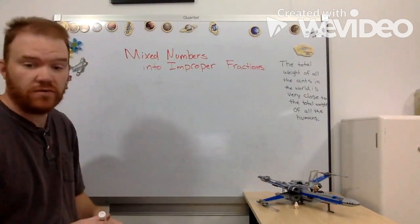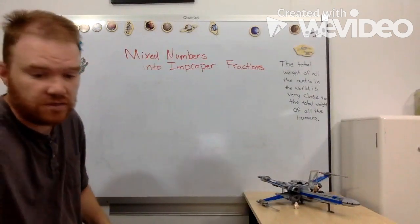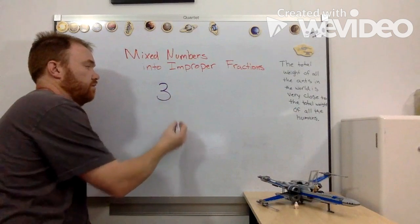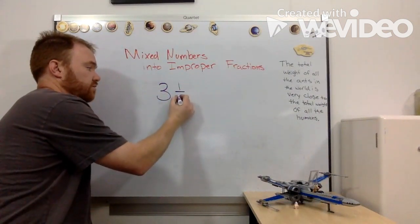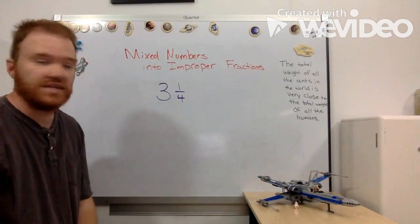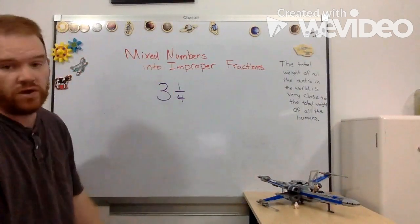First I want to review what a mixed number is. A mixed number is whenever I have a whole number and a fraction. So in this case I have the fraction three and one-fourth.